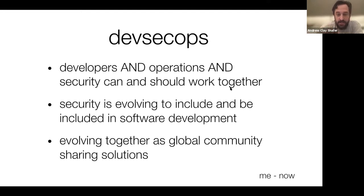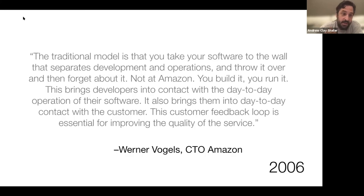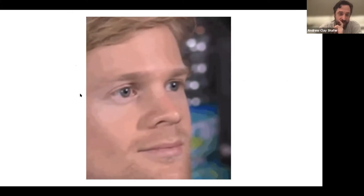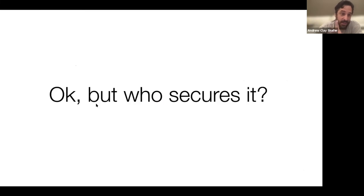This is a pretty famous quote from Werner Vogels in 2006: in traditional models you take your software to the wall separating development and operations, throw it over, and forget about it. Not at Amazon — you build it, you run it. People get confused about what Werner means. When he says that in 2006, EC2 has launched, there's infrastructure as a service already built up. Those developers aren't provisioning and operating their own databases or operating systems — they're really just worried about that top layer.